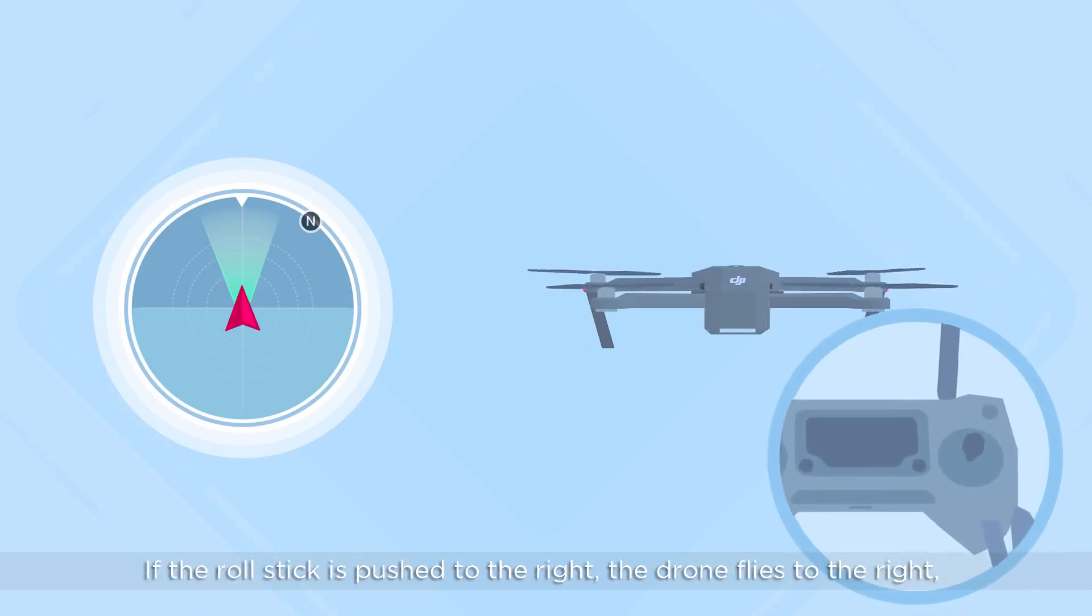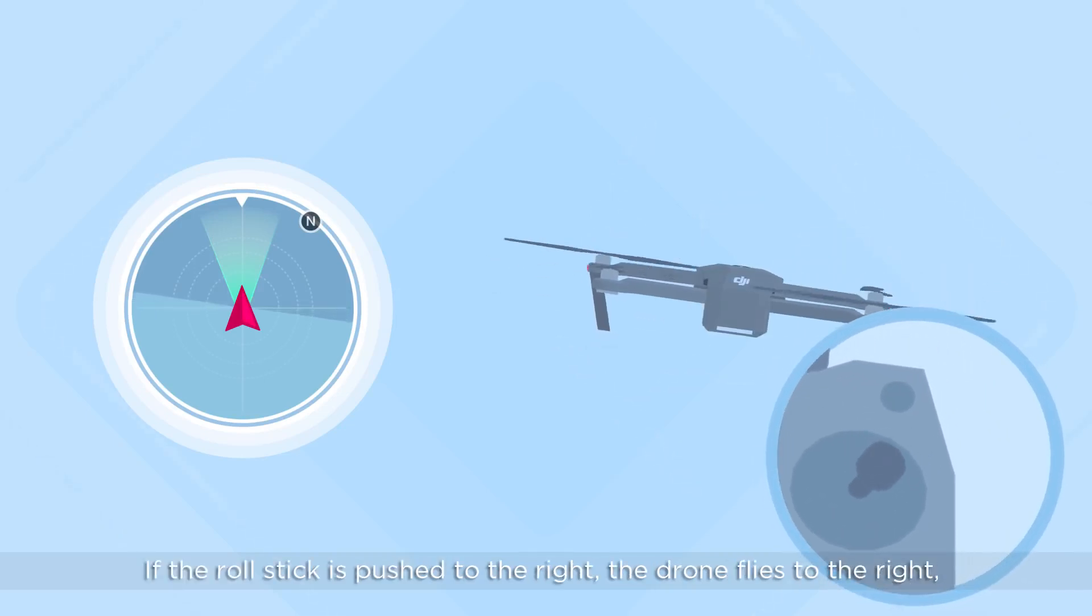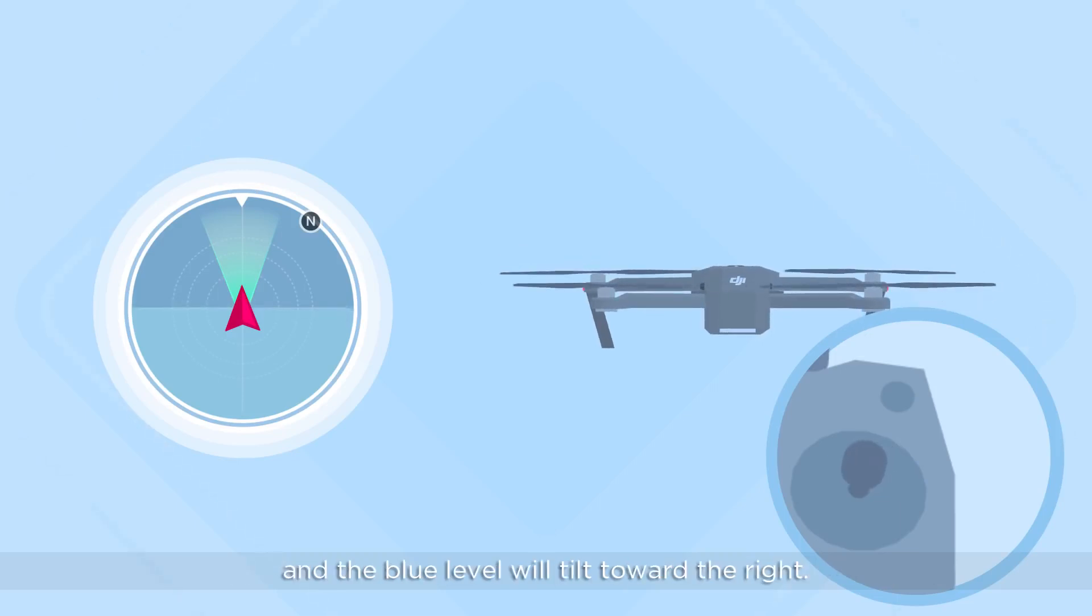If the roll stick is pushed to the right, the drone flies to the right, and the blue level will tilt toward the right.